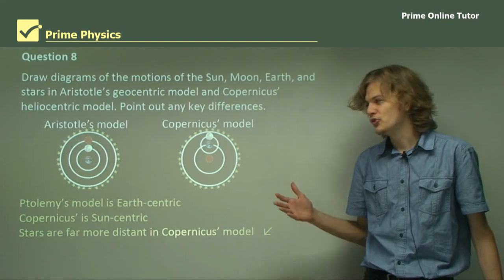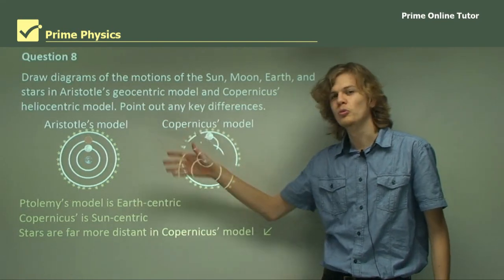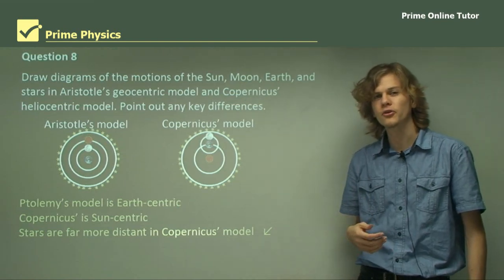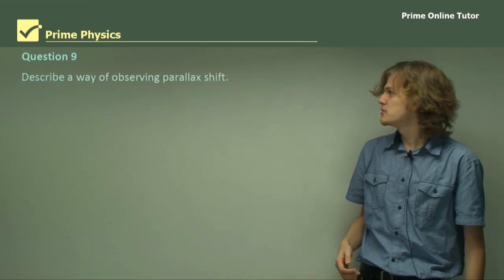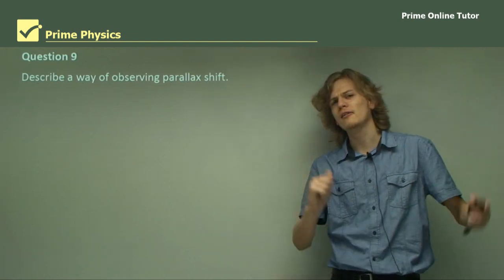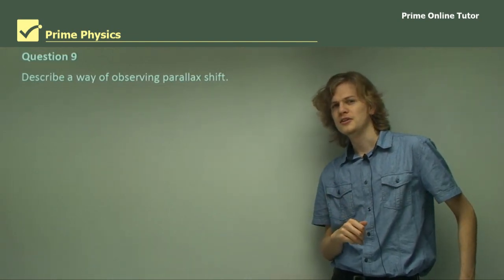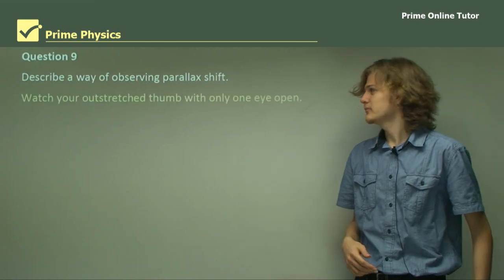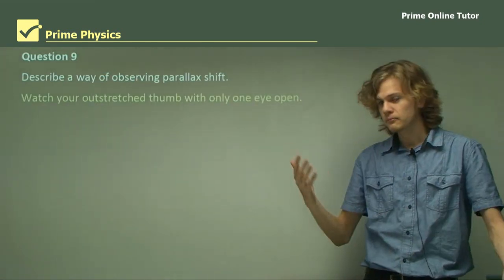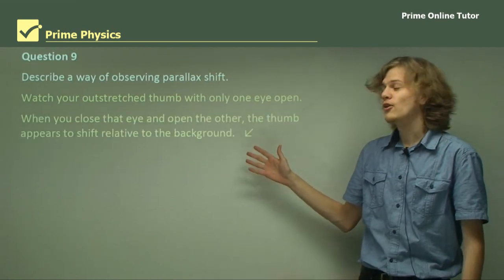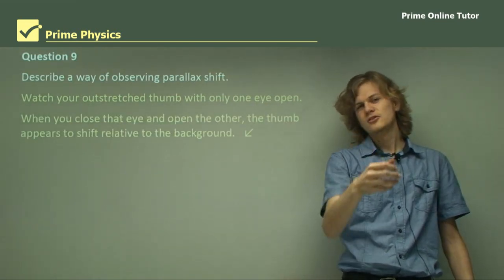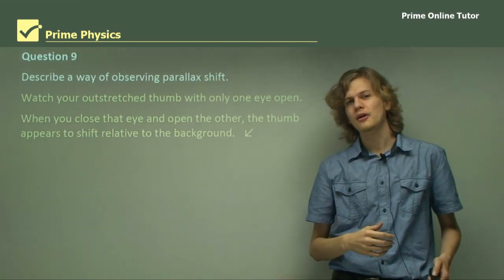One similarity between the two models is that they both have the Moon orbiting the Earth and both have a sphere of stars at the outermost edge of the universe. Question 9: Describe a way of observing parallax shift — not stellar parallax shift, just any parallax shift. This one's easy. Hold your outstretched thumb up with only one eye open, then close that eye and open the other. The thumb appears to shift and you can see it moving relative to the background. That's parallax shift.